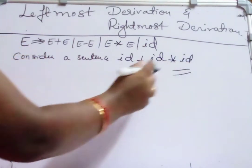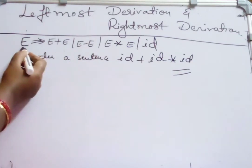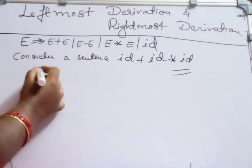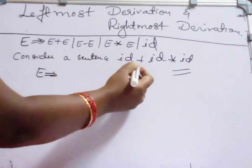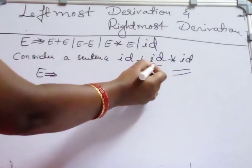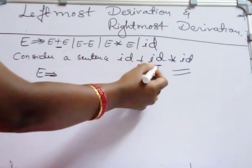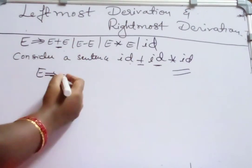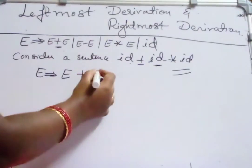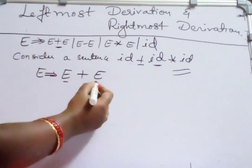We should try to derive this sentence using leftmost derivation with this grammar. Always start from the starting symbol E. I want to derive ID plus ID star ID. Since ID is the terminal symbol, I am taking the rule E derives E plus E, which is my leftmost non-terminal here.